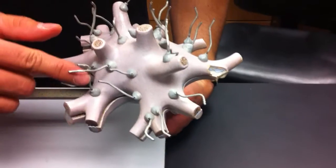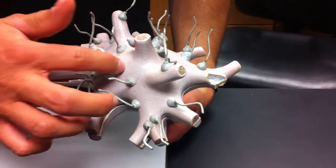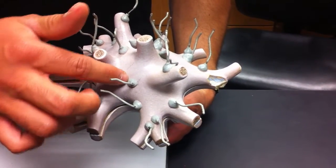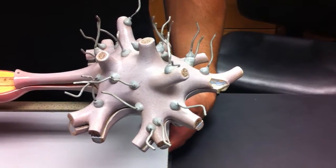We have some axon terminals from another neuron attaching at the synapse or synaptic cleft, sending their neurotransmitter in there.